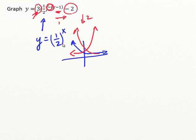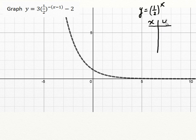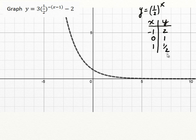Let's get the base function graphed and then follow the same procedure as before. Here's the base function: y equals 1 half to the exponent x. Making a quick table of values: when x is negative 1, y is 2; when x is 0, y is 1; and when x is 1, y equals 1 half to the exponent 1, which is 1 half. Those three key points follow the shape of the graph. Let's apply all these transformations one step at a time.